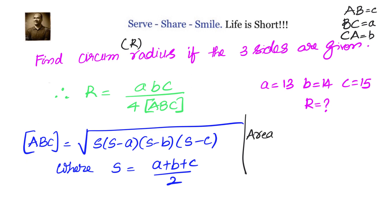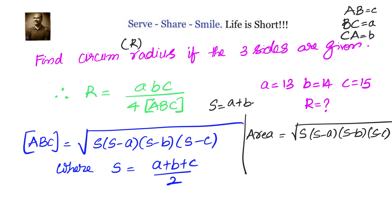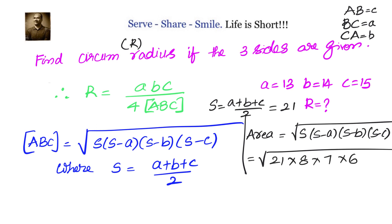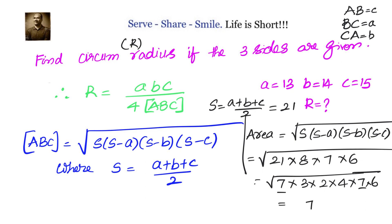First, calculate the semi-perimeter: s = (13 + 14 + 15) / 2 = 42 / 2 = 21. Then area = √(21 × 8 × 7 × 6). Factorizing: 21 = 7×3, 8 = 2×4, giving us area = 84 square units.